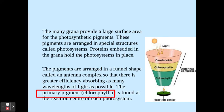These photosynthetic pigments are arranged in structures called photosystems. As we go through photosynthesis, you'll learn that there are two photosystems we need to be aware of: Photosystem 2 and Photosystem 1, which are both involved within the light-dependent reaction.